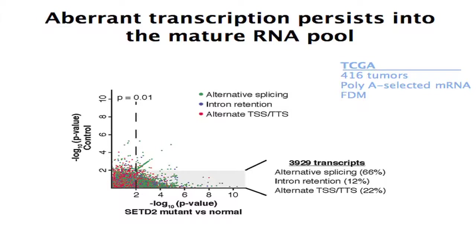What we found is that for a large number of transcripts — near 4,000 transcripts — we saw a statistically significant change in their RNA, dominated in this case by alternative splicing. That makes sense because aberrant messages should be filtered out during RNA processing, so what you'd expect to see when you purify mature message would be alternative splicing that persists through. So alternative splicing was the major phenotype in this experiment.